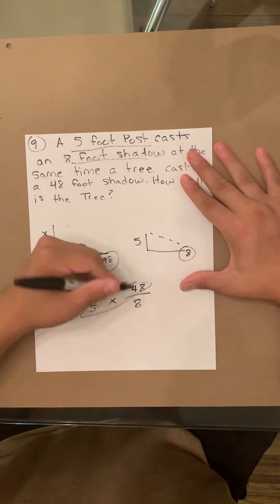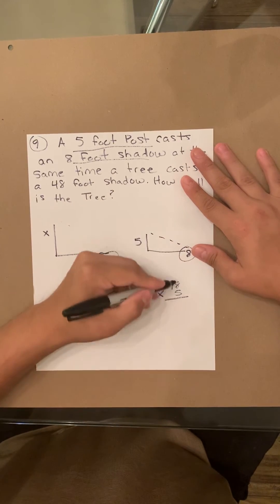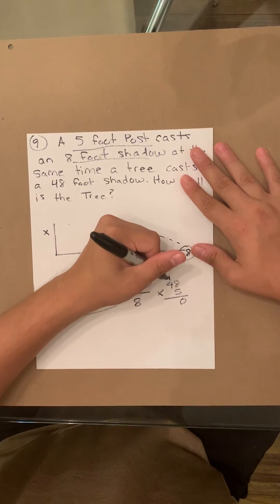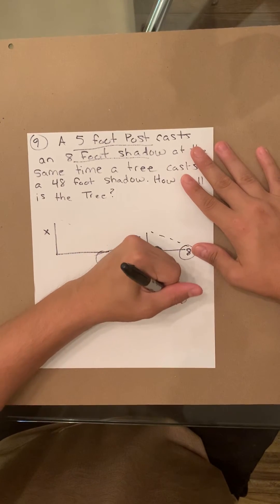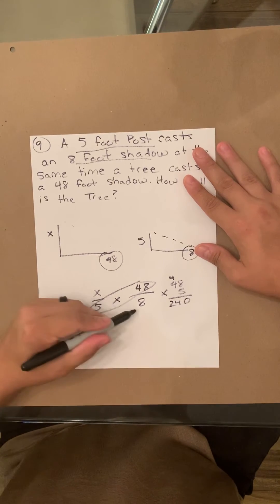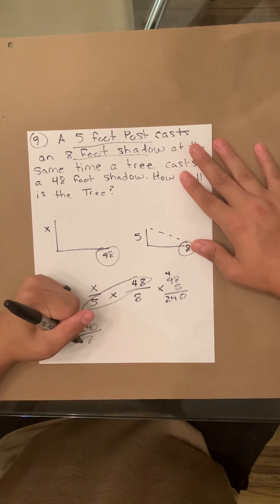So it's going to be 48 times 5. 5 times 8 is 40. 5 times 4 is 20, plus 4. That's 24. So 240. And then you're going to do 8 times X. X equals 1, so 8 times 1 equals 8.